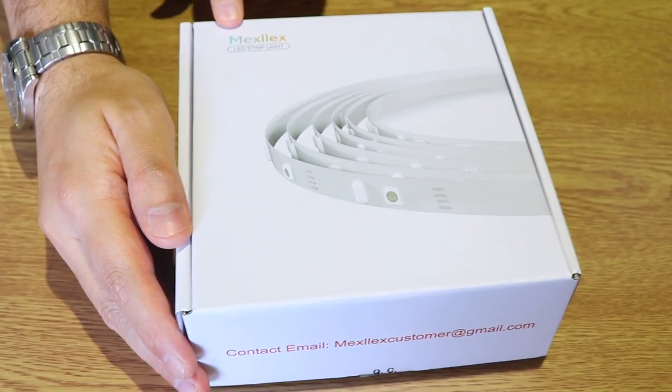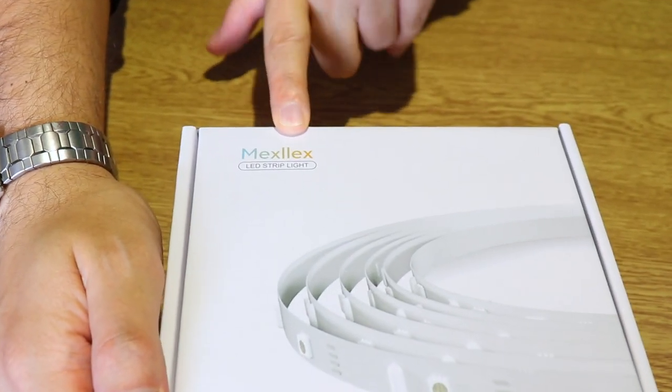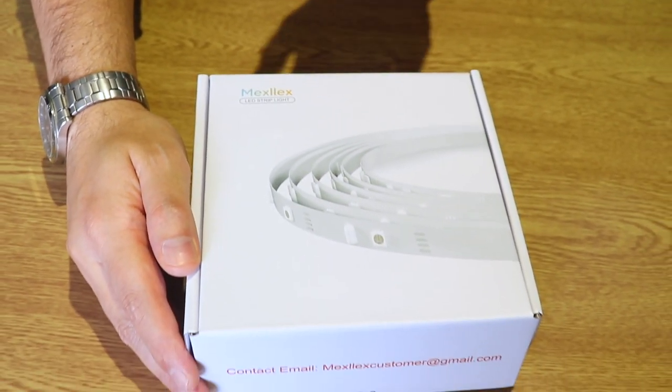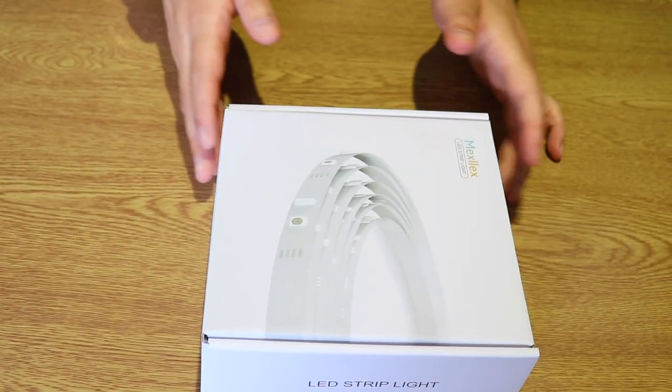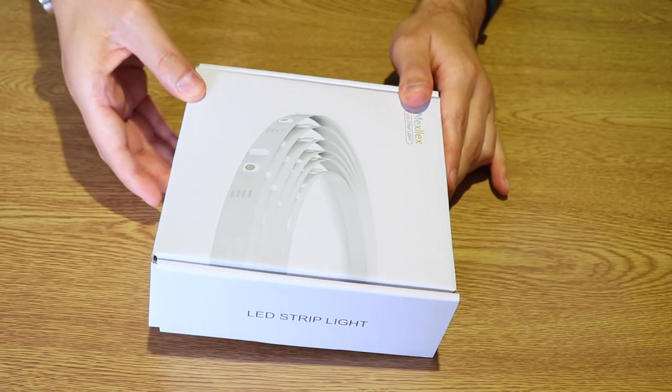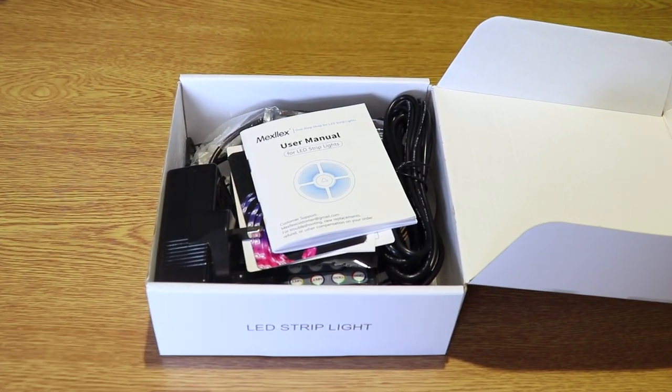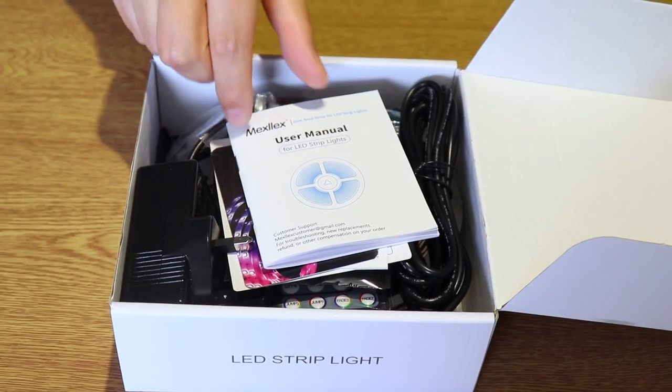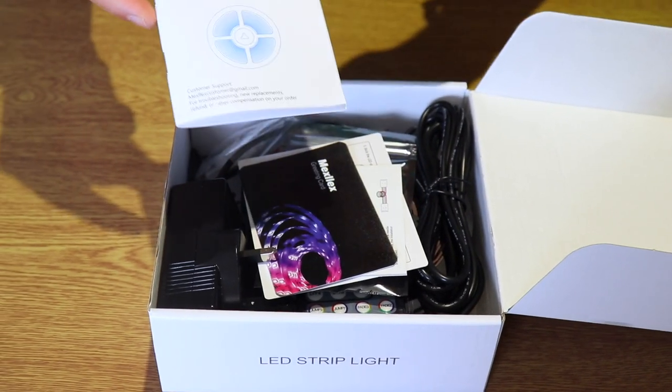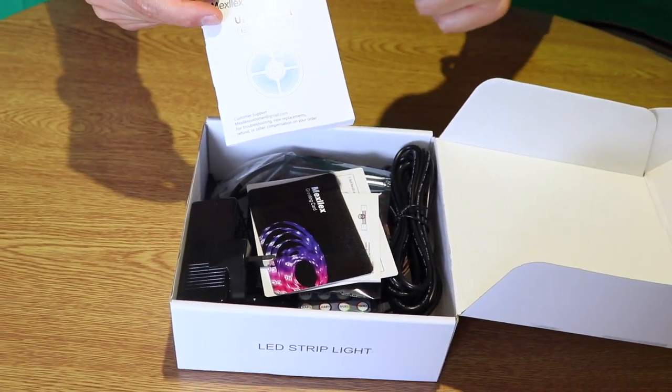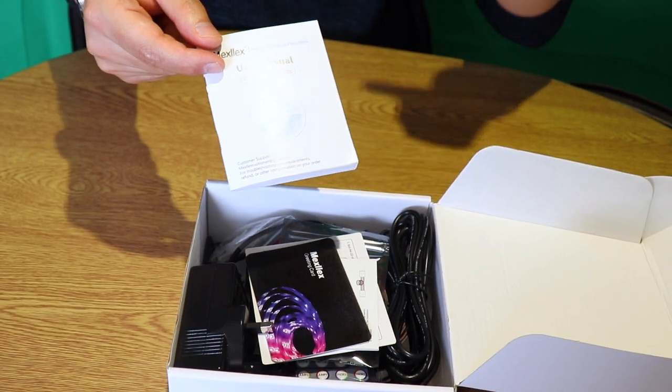So first let's see what is in the box. The company is called Maxlex. If I pronounce it properly, I hope I do. So pretty good lights to be honest. Let's see what we have in the box first. So we have the user manual, which I think you should have a look because there's a couple of new things that you need to know about the lights.